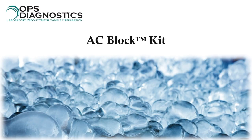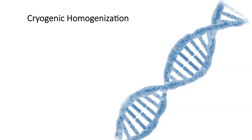The AC block kit is an effective high throughput method for cryogenic grinding of samples. The integrity of biomolecules such as DNA, RNA, and proteins is often compromised during sample preparation.